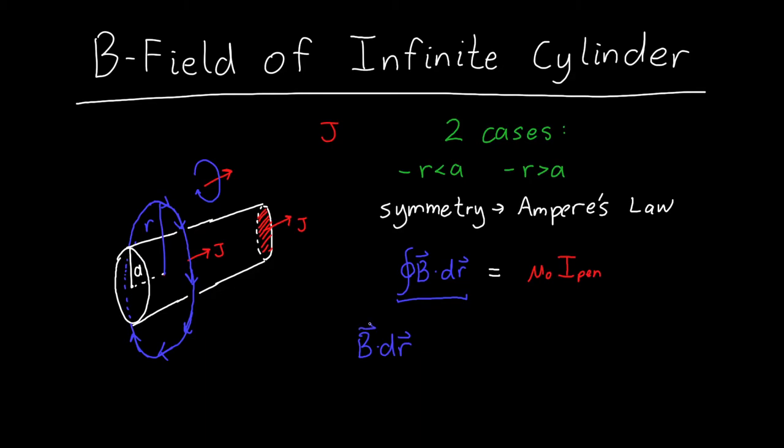And so B dot dr, because B is always pointing along what we call the phi component, we only care about the piece of dr that's pointing along the same direction as B. So this is just equal to the magnitude of B times r d phi. And r d phi is just a little bit of length along this curve. So if we integrate this along a circle around the cylinder, and I've chosen a circle because this has cylindrical or circular symmetry.